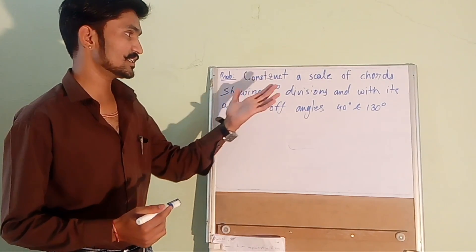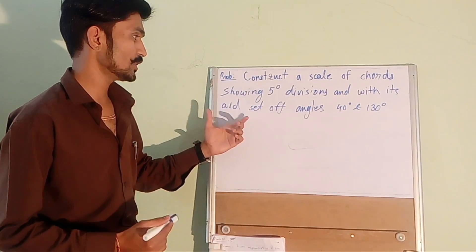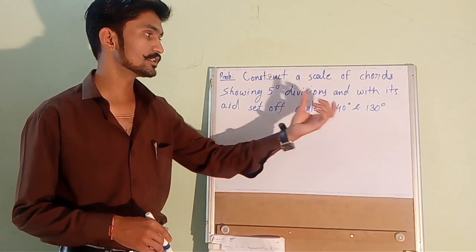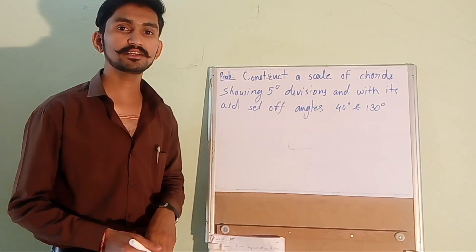The question is construct a scale of chords showing 5 degree divisions and with its aid set off angles 40 degree and 130 degree.